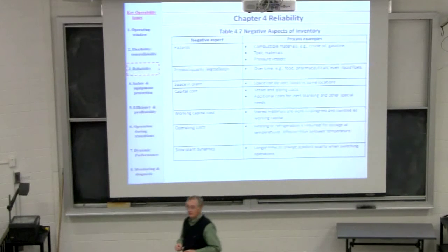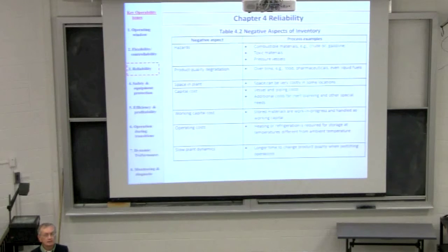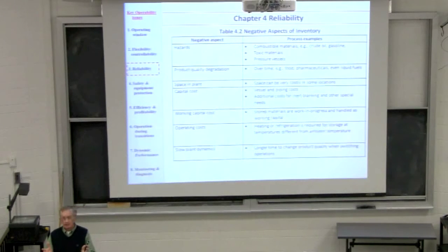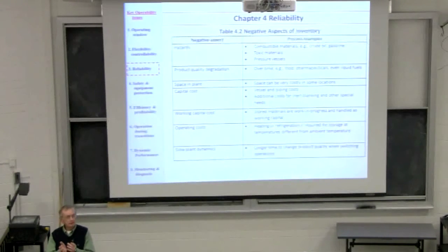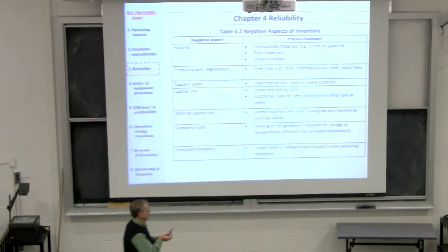Why don't you want inventory? The number one reason is hazards — if you have any hazardous material, the more of it you have, the worse off you are if something goes wrong. Consider Bhopal: they had a large inventory of methyl isocyanate. They had two unreliable plant units and stored this extremely hazardous material so that if either one shut down, the other could keep running. When it leaked, at least 3,000 people were killed. There were chemical processes that would have eliminated that inventory requirement, but they chose not to use them.